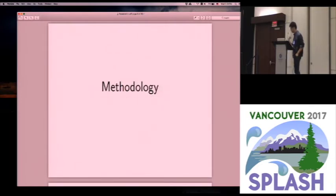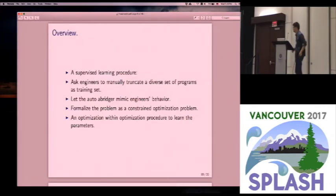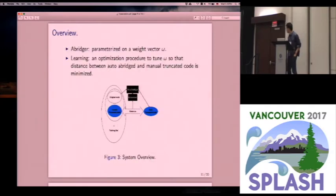So I will then talk about the methodology in our approach. Basically, we just apply a supervised learning approach for this problem. In a very high level, we just ask engineers to manually truncate a diverse set of programs. We treat such set as the training set. Then we let the auto-abridger mimic engineers' behavior. So as I mentioned, we just formalize this problem as a constraint optimization problem. Then we use supervised learning to tune that.